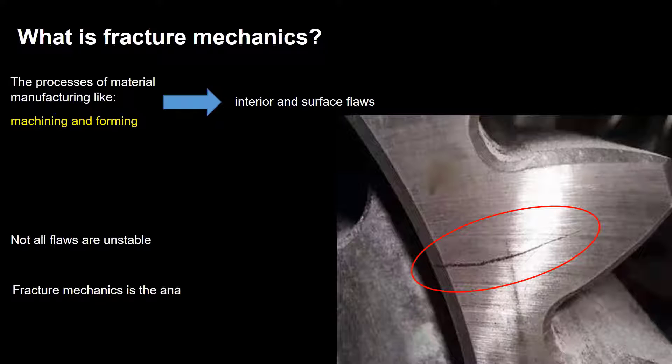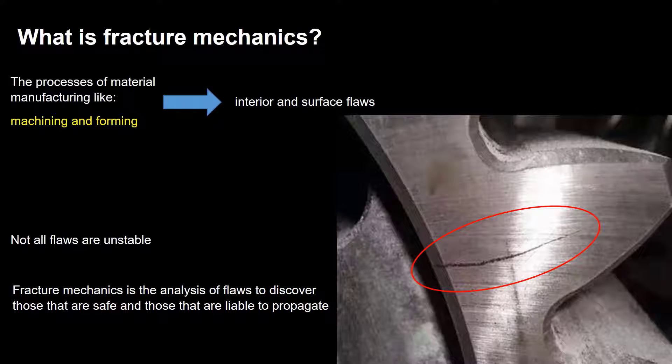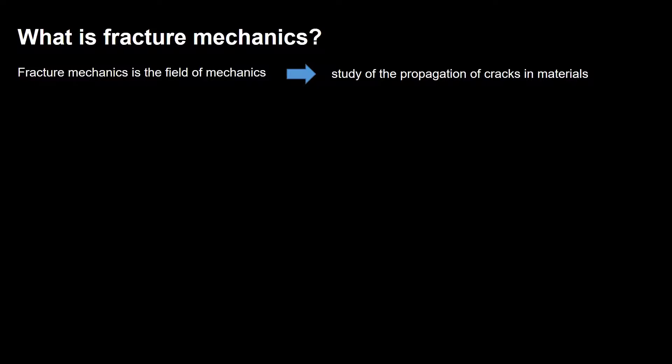Fracture mechanics is the analysis of flaws to discover those that are safe and those that are liable to propagate as cracks. Fracture mechanics is the field of mechanics concerned with the study of the propagation of cracks in materials. As every criterion in mechanics, fracture mechanics related to two parts.